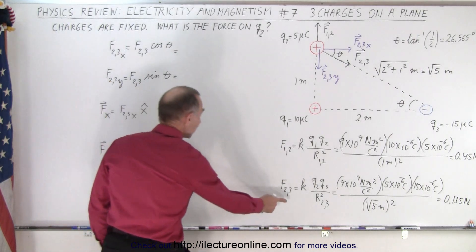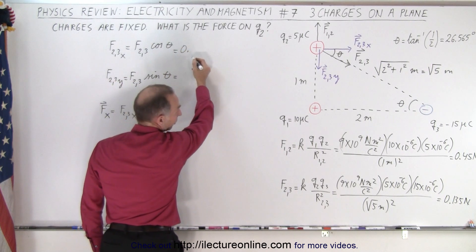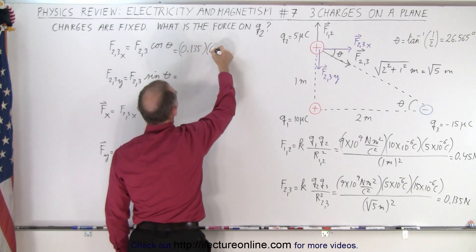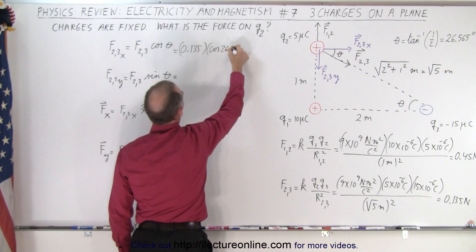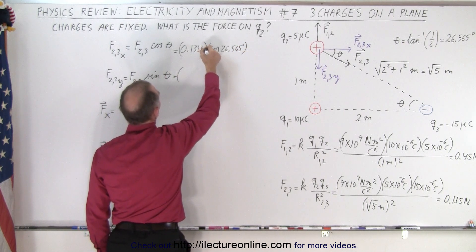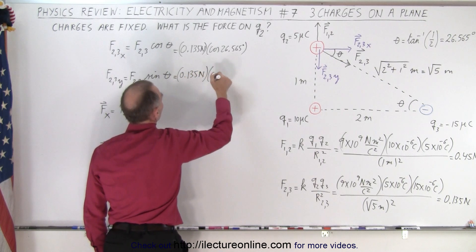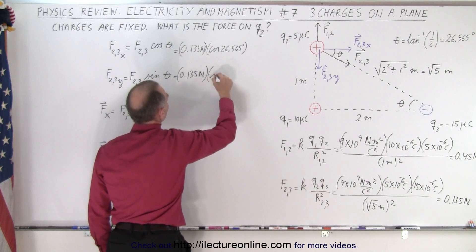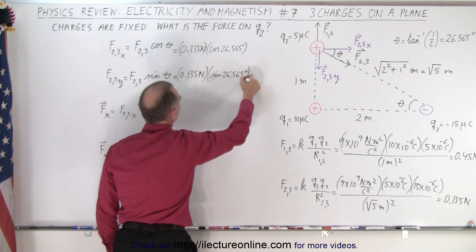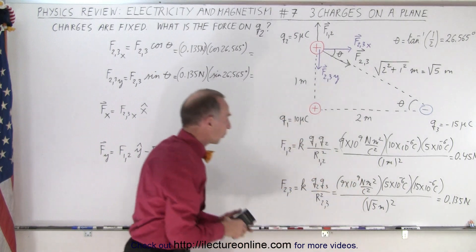Now we need to find the x and y components of this right here. So this is equal to 0.135 newtons times the cosine of 26.565 degrees, and here it is equal to 0.135 newtons, times the cosine, not the cosine in this case, this would be the sine. So looking for the y component, the sine of 26.565 degrees. So now we get the x to y components of that diagonal force.